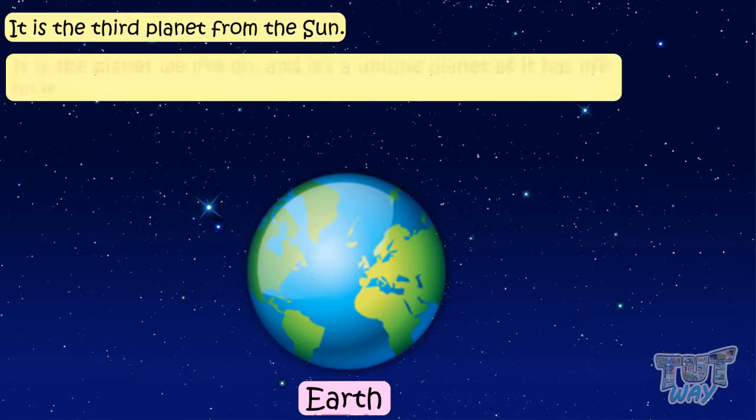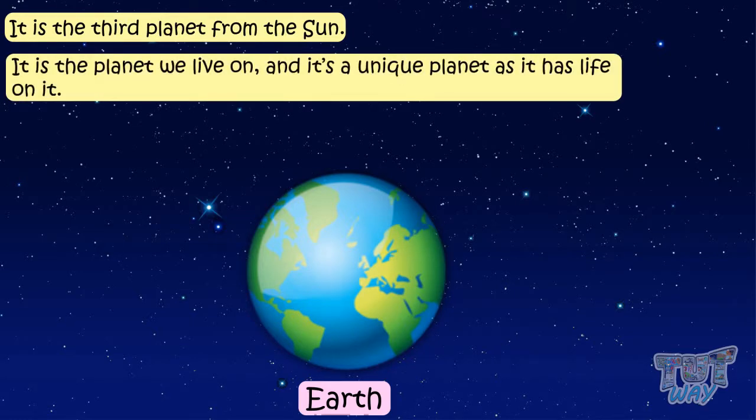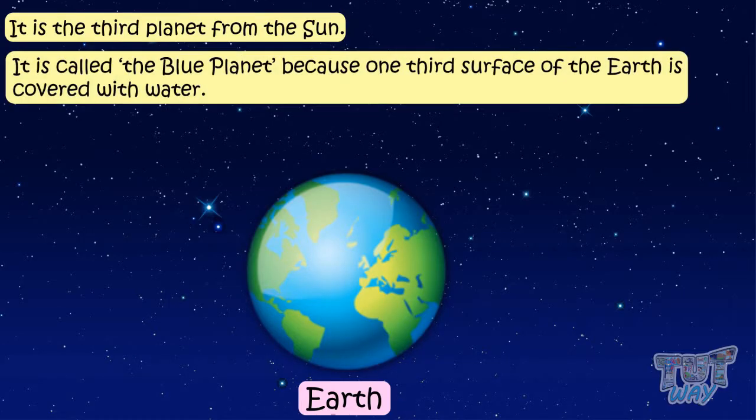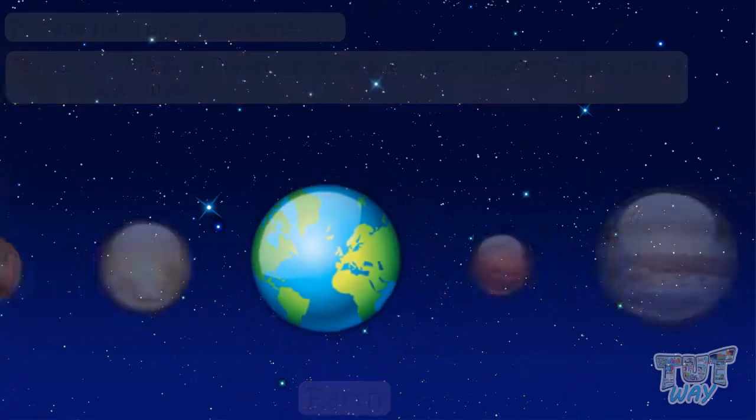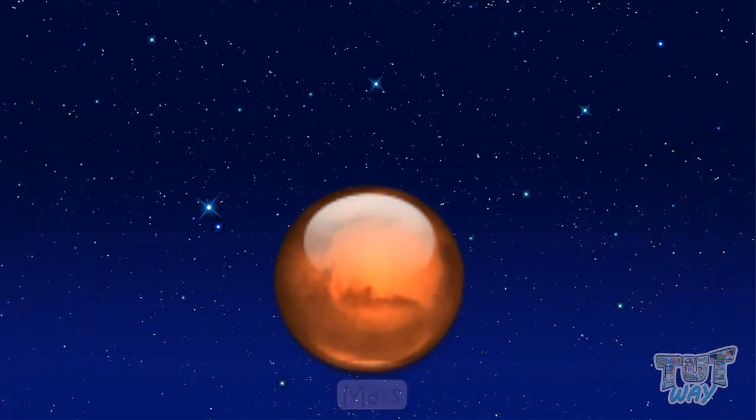Earth. It is the third planet from the Sun. It is the planet we live on and it's a unique planet as it's the only planet with life on it. It is called the blue planet because one-third of the surface of Earth is covered with water.